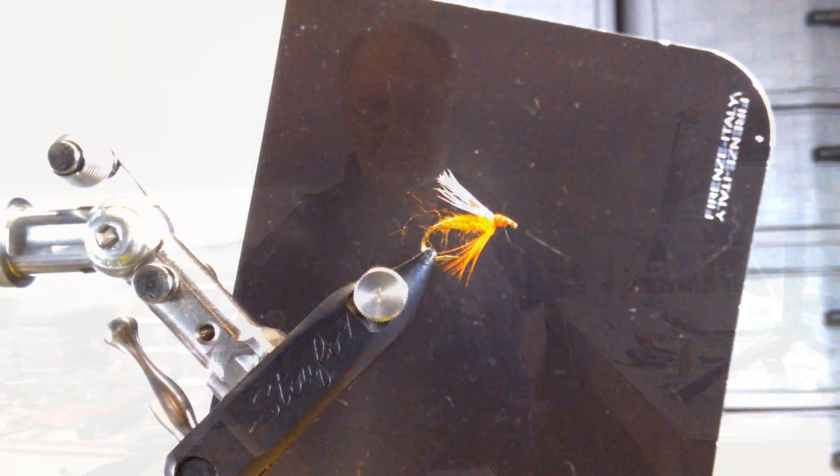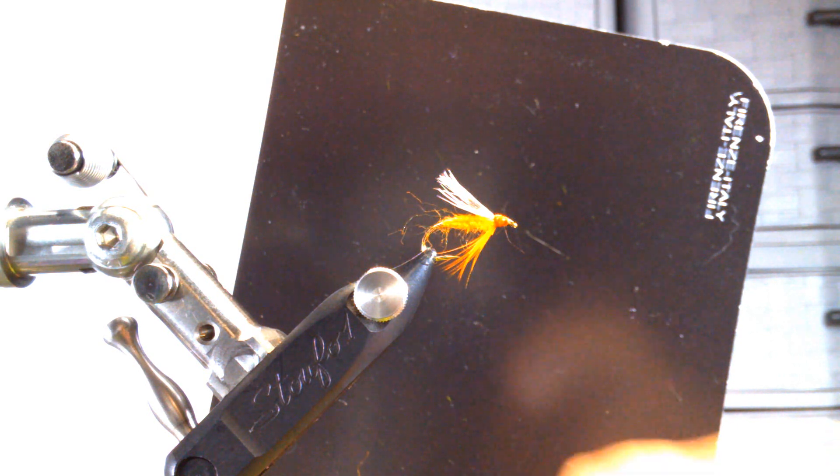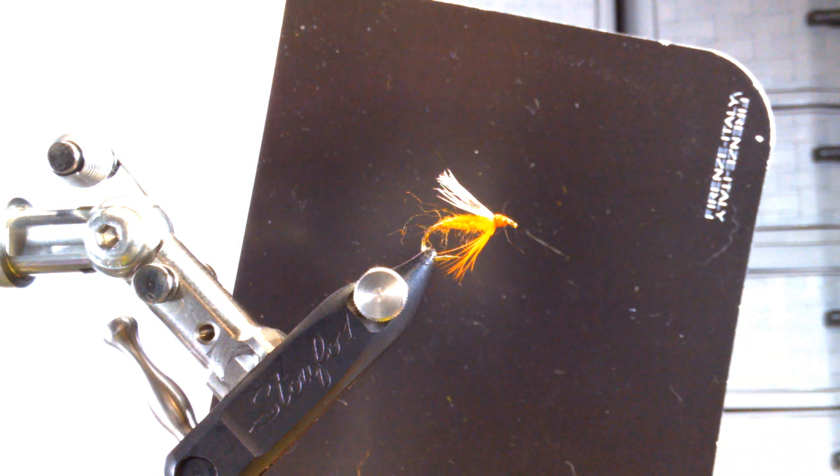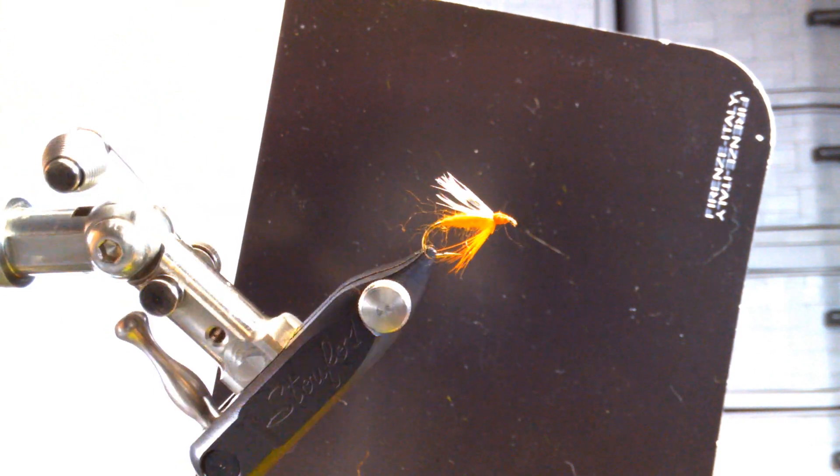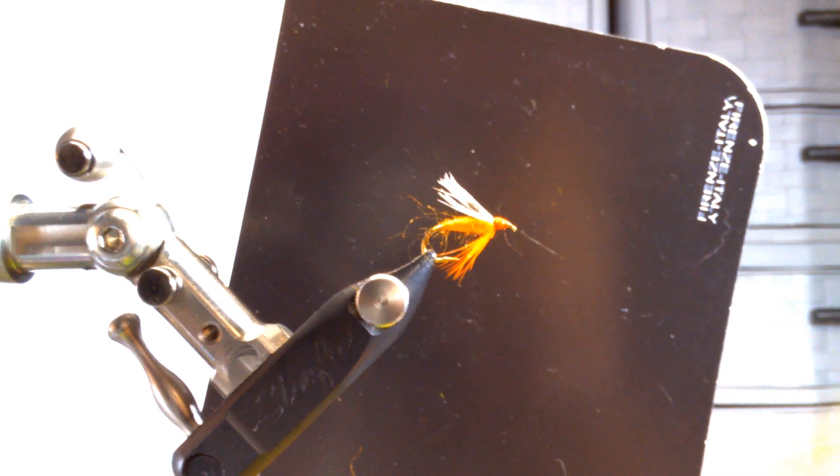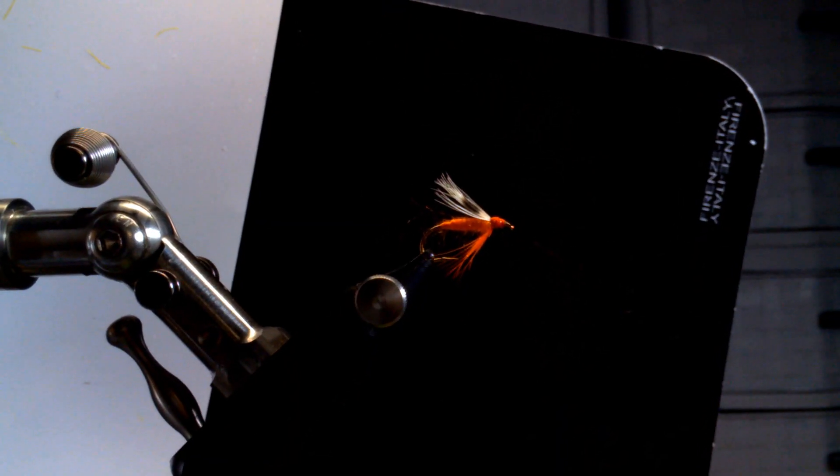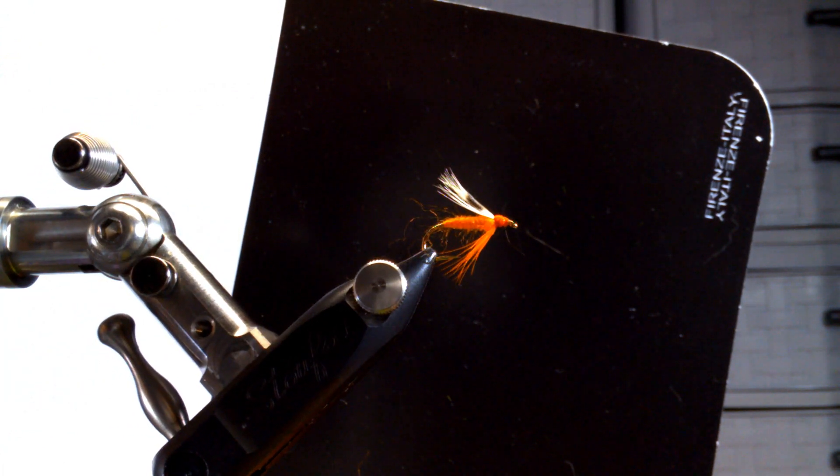Alright. This is a fly that I'm gonna attempt to replicate here, it's called the Wilson fly. It's orange wool body, you can either use dubbing or yarn, I'm gonna take the easy way out and use yarn. It's got orange throat just about to where the point of the hook is, or around the barb. A teal feather with a single dot and orange thread.